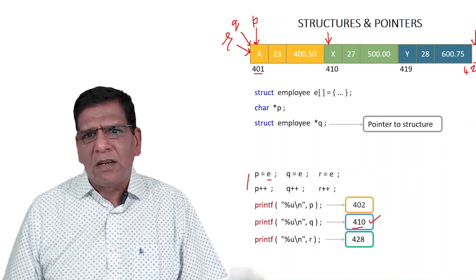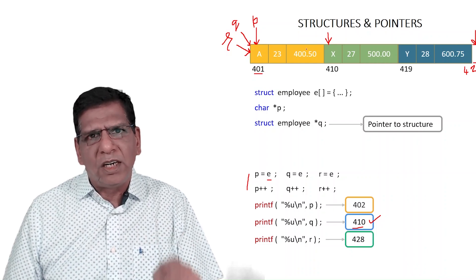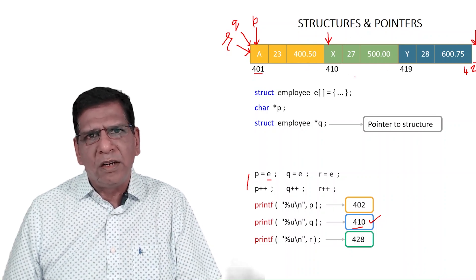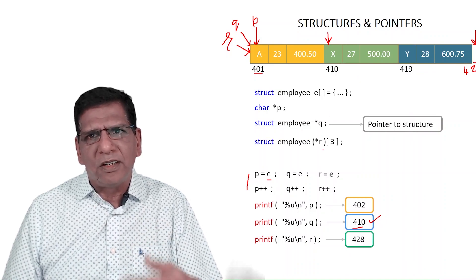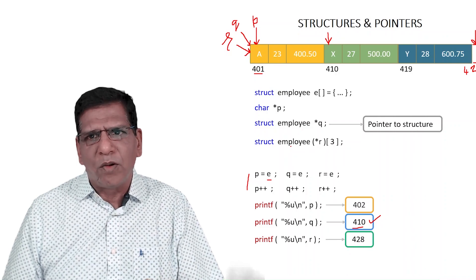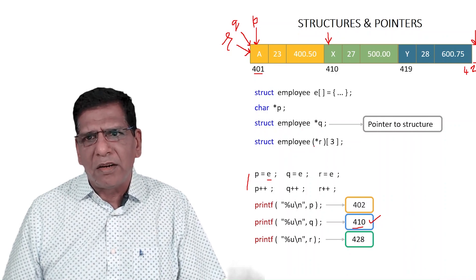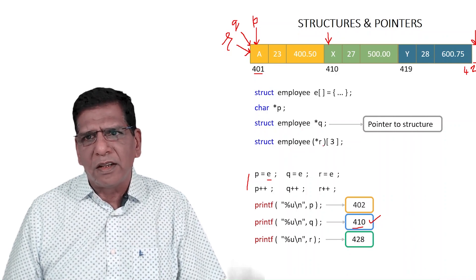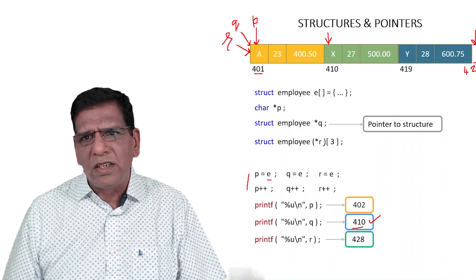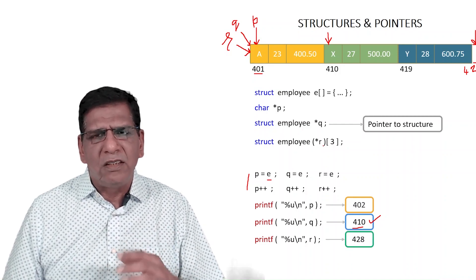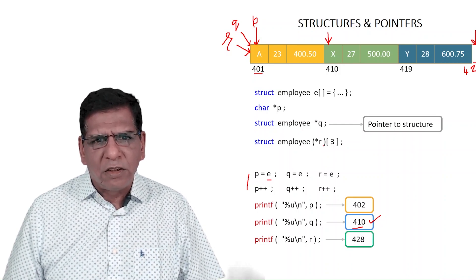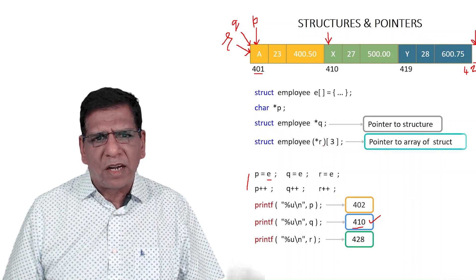419, then 28 will be at 420, 21, 22, 23, 600.75 would be at 424, 25, 26, 27, 4-byte float. So this will really be at 428. I want to reach here, so I should treat R as a pointer to an array of three struct employees. And these parentheses you appreciate are vital.